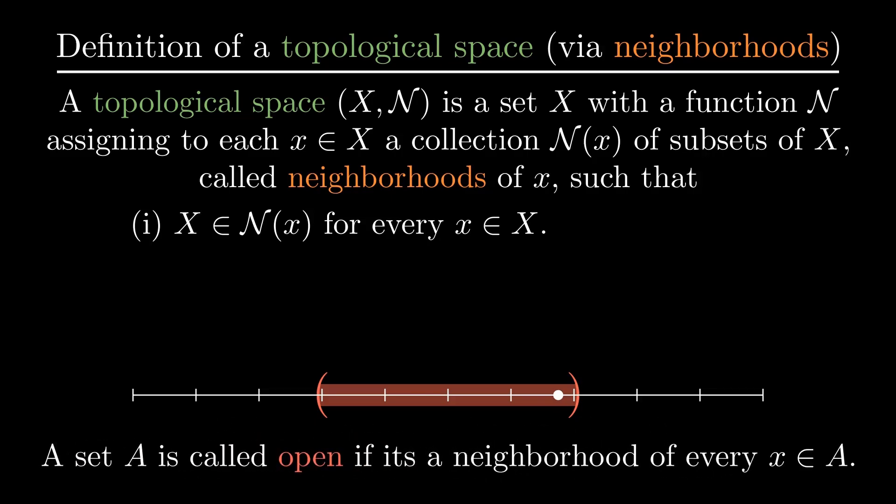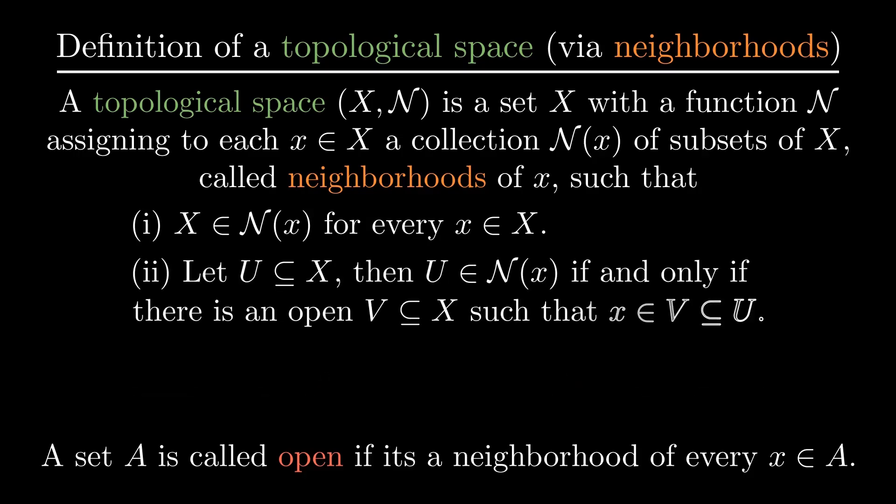Sets with this property are called open, as they are a neighborhood of every point in the set. In general topological spaces, we want a set to be a neighborhood of x if and only if it contains an open set around x.